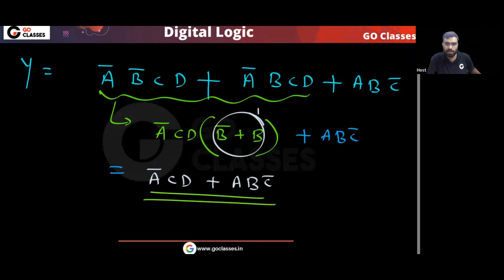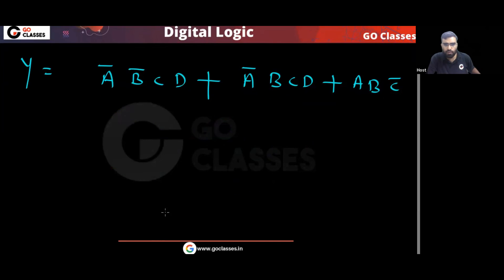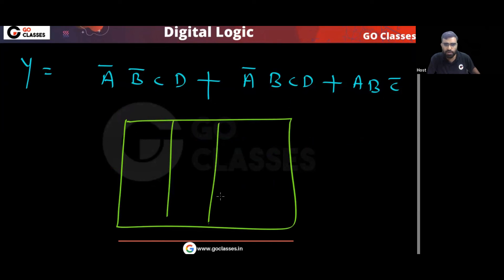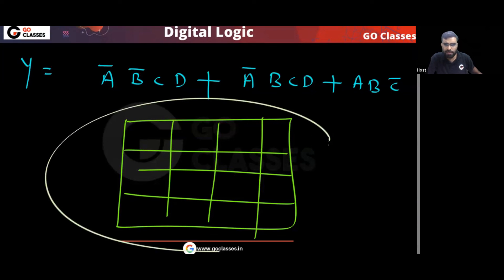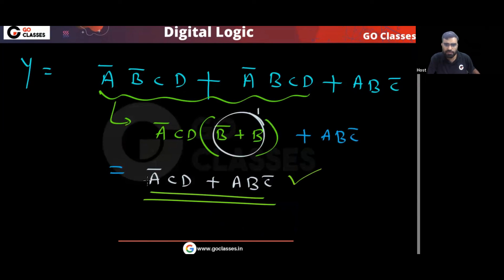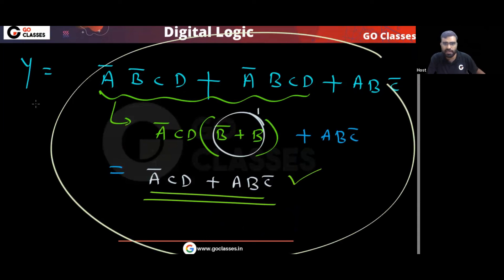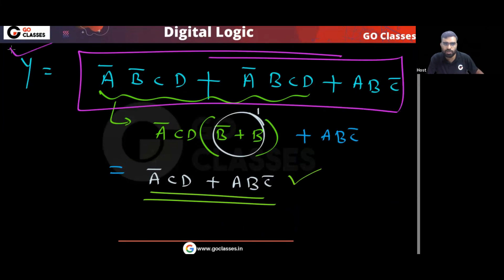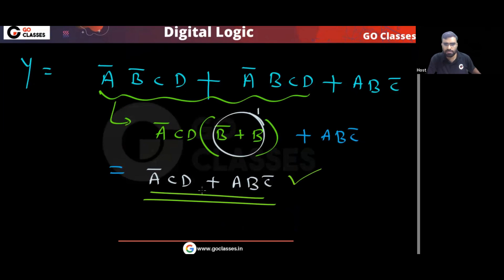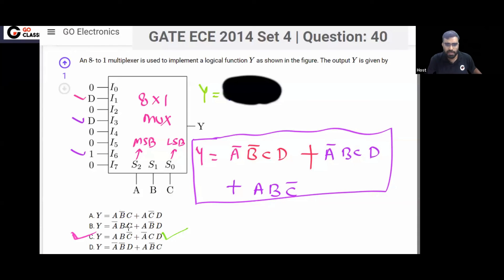If you want, you can also create a K-map — a 4-variable K-map for A, B, C, D — and then solve. But that will take more time. The best way is to do this algebraic simplification directly, or you can eliminate options once you have the expression. Either way, the answer is option C.